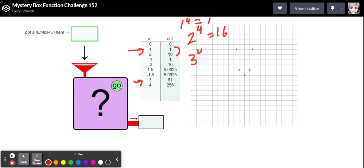3 to the fourth power, 3 times 3 times 3 times 3, that is 81. So 3 times 3 is 9, times another 9, that's 81. So I think we've just got f of x equals x to the fourth power.